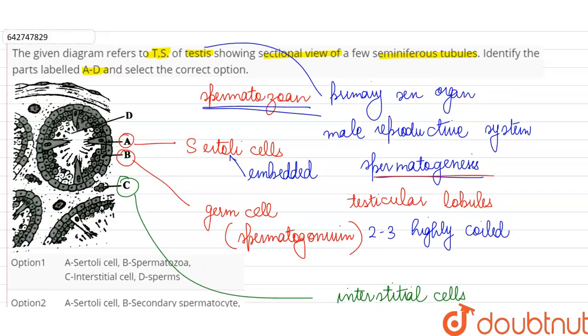And finally, the part which has been labeled D over here is our mature sperm or spermatozoa which we can see inside our seminiferous tubule.